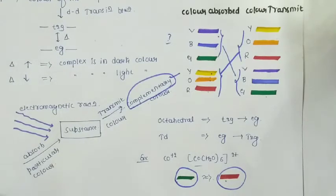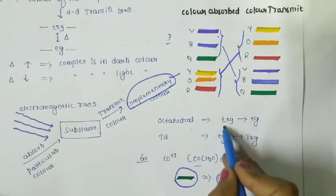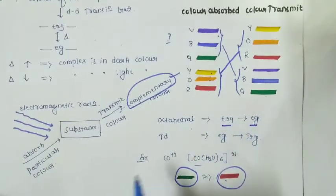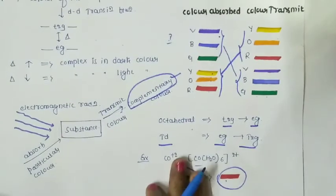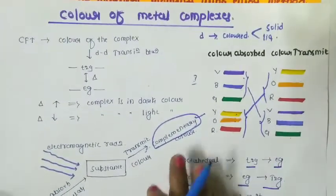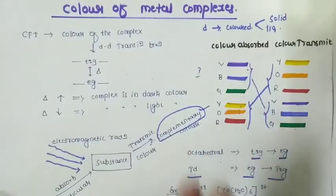In case of d-d transition: for octahedral complexes it's t2g to eg, and for tetrahedral complexes it's eg to t2g.